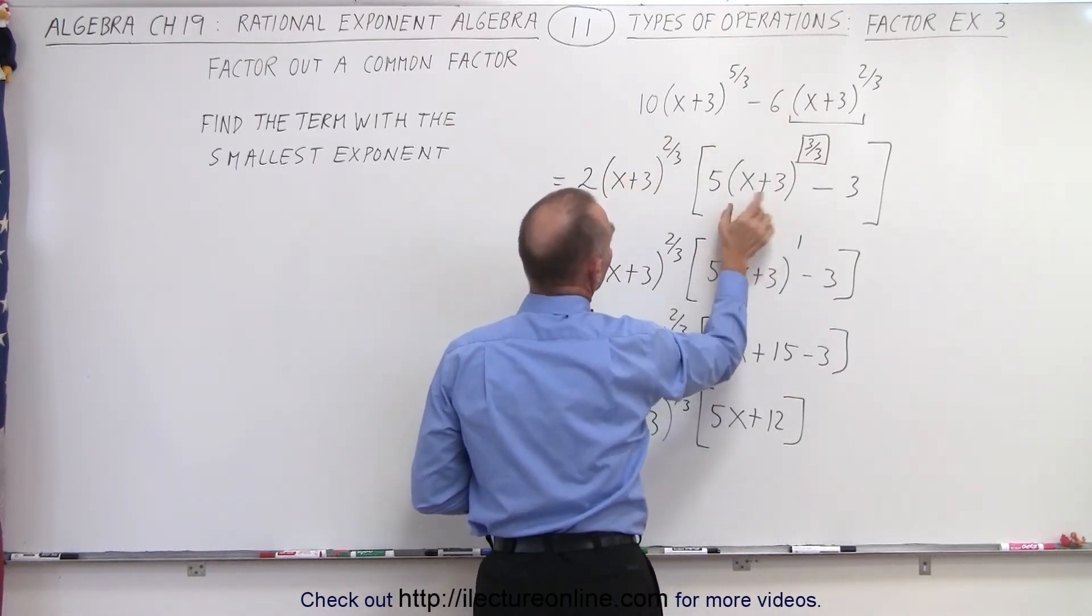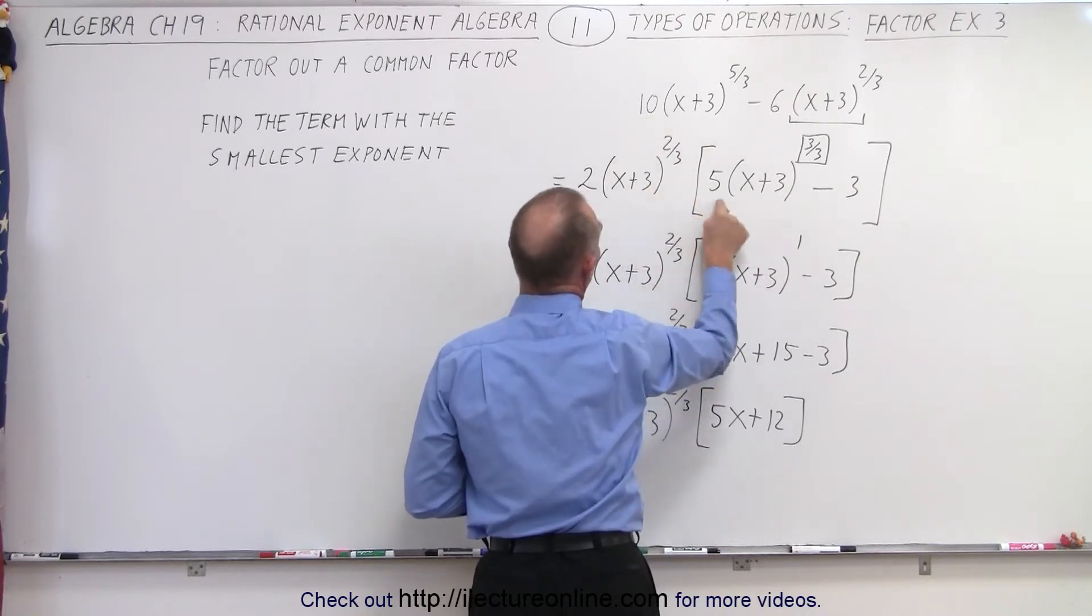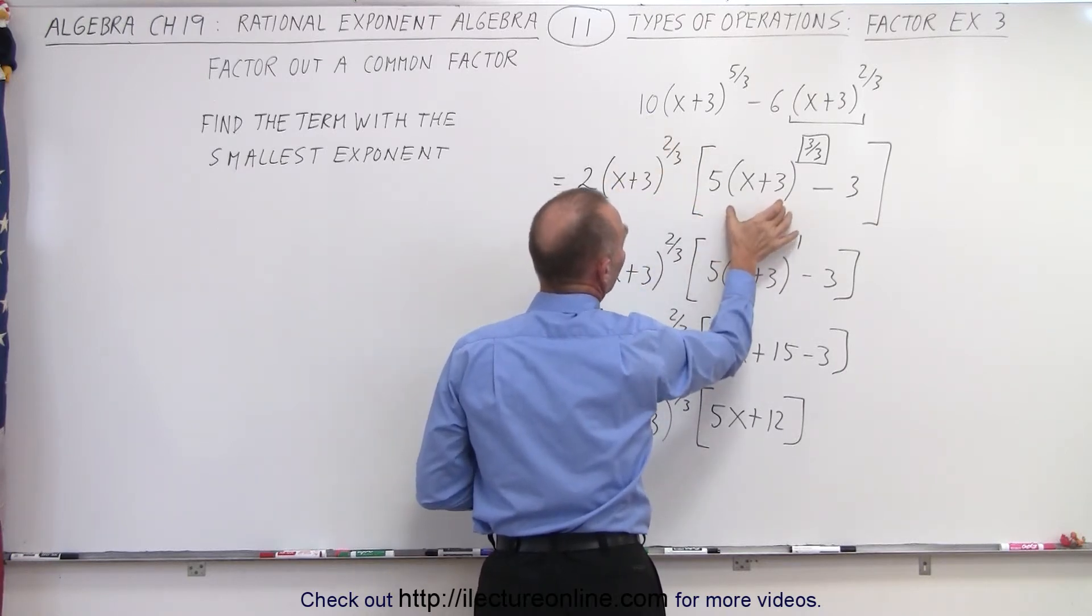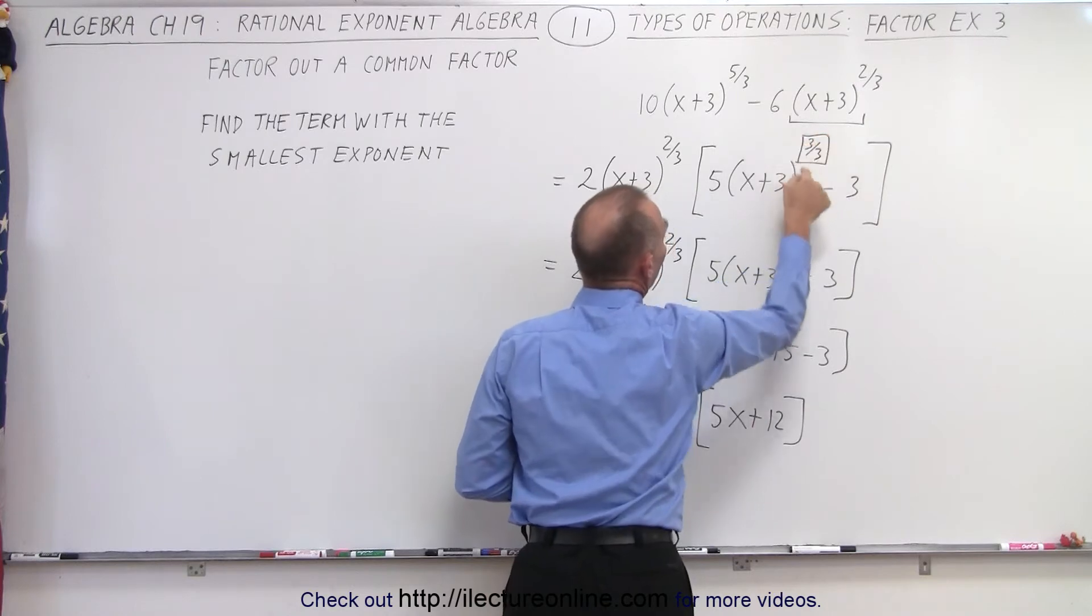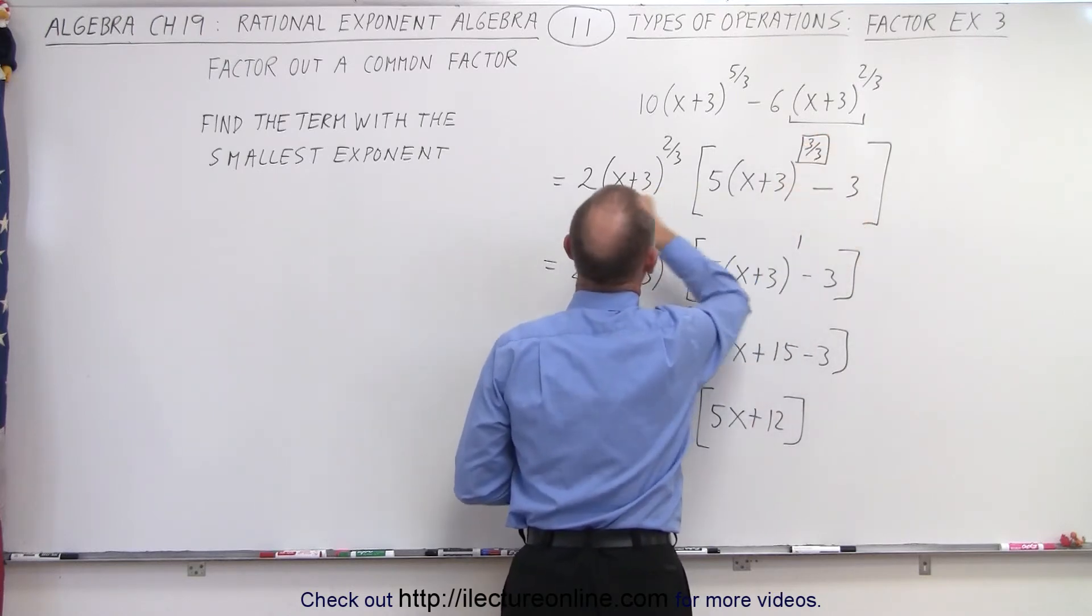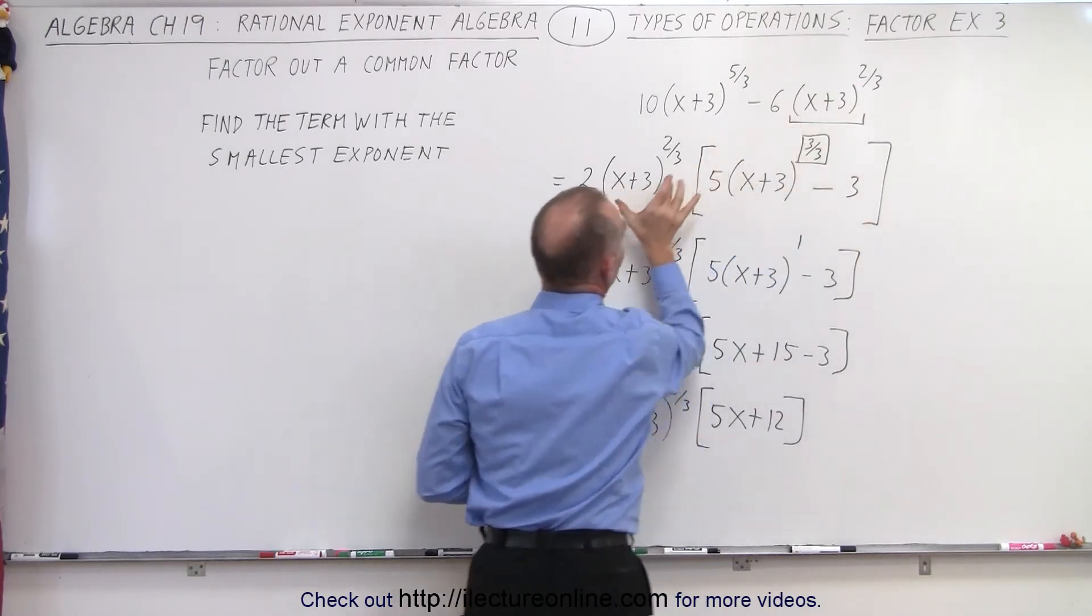Then notice, you'll have something left. You have 5, because 2 times 5 is 10, (x+3) to some exponent, minus 3, because 3 times 2 is 6, and this has been factored out.